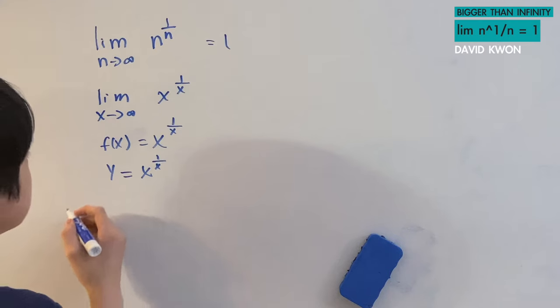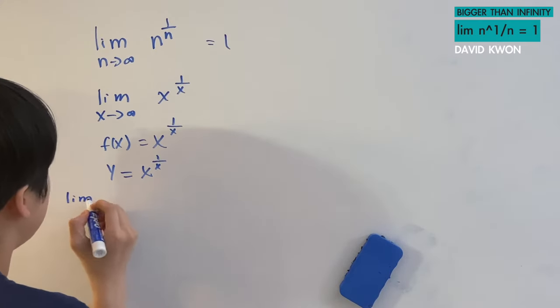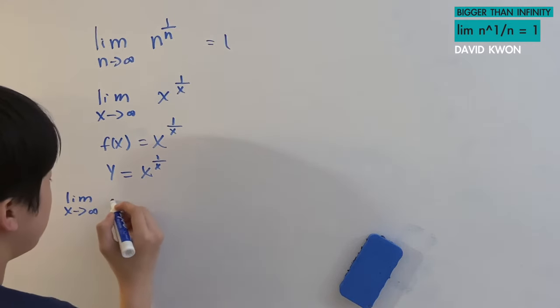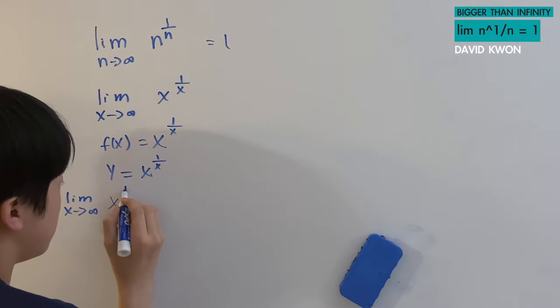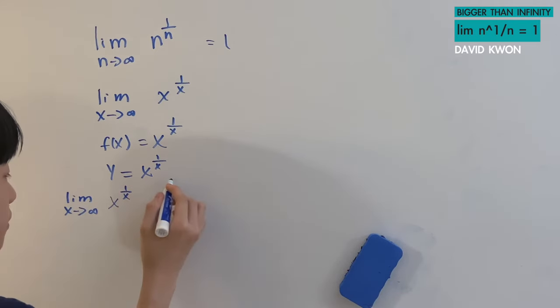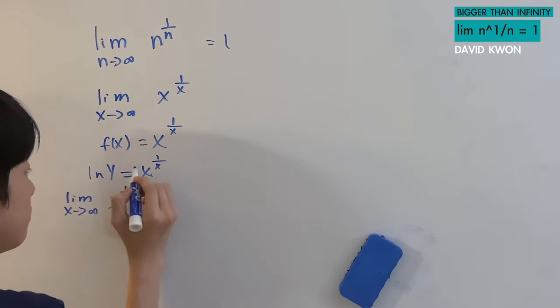So, we have that as limit of x approaches to infinity of x to the power of 1 over x. We are not done yet, because over here, I will put an ln there.